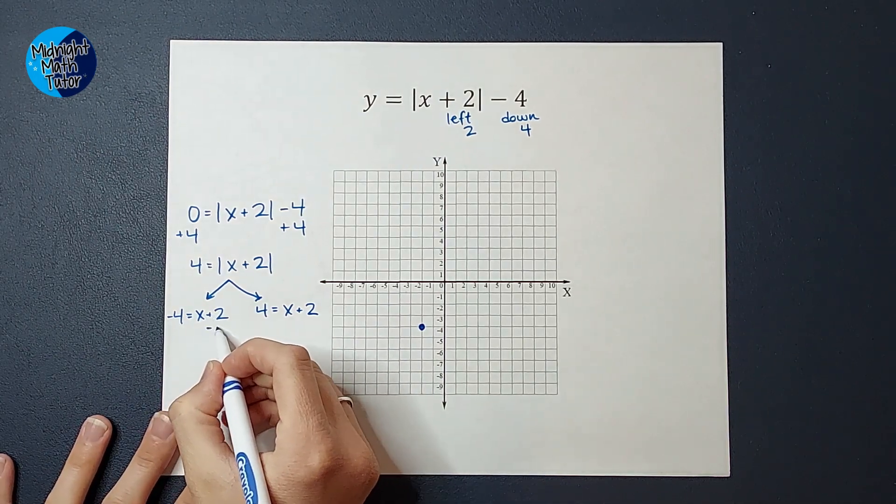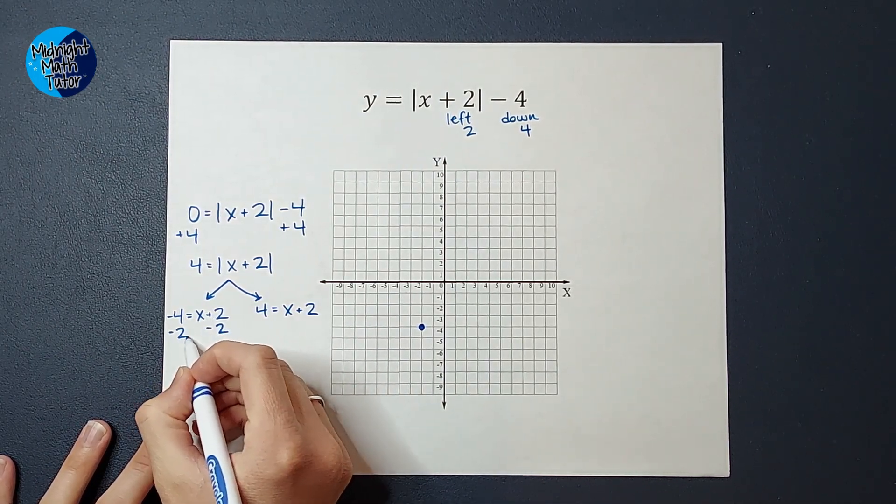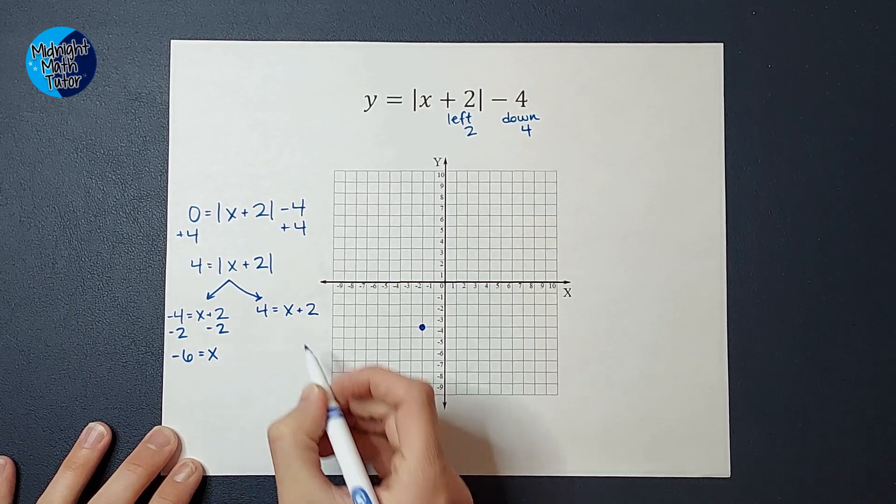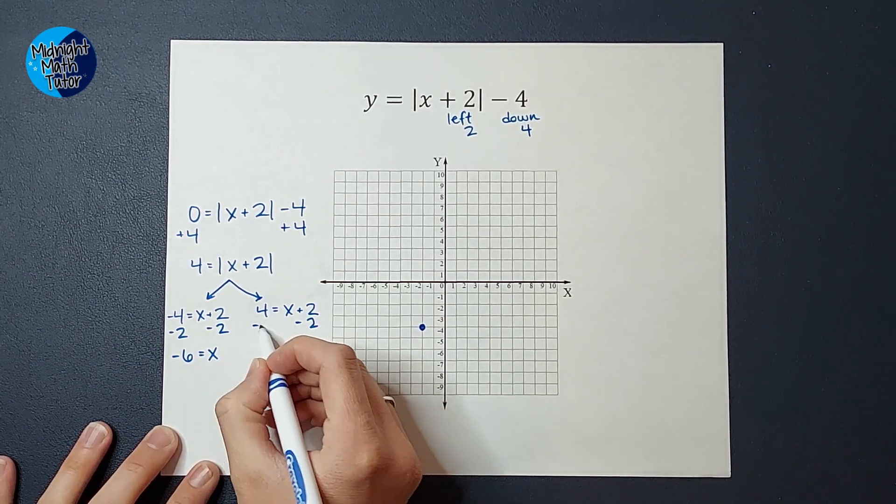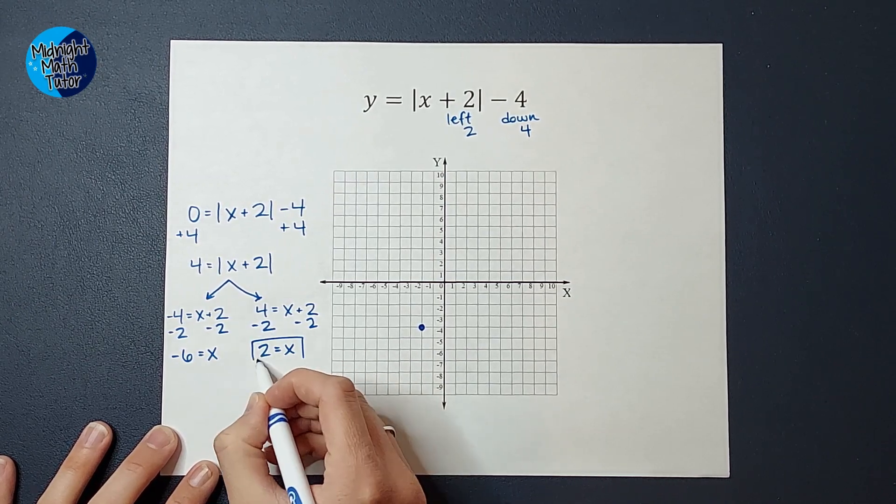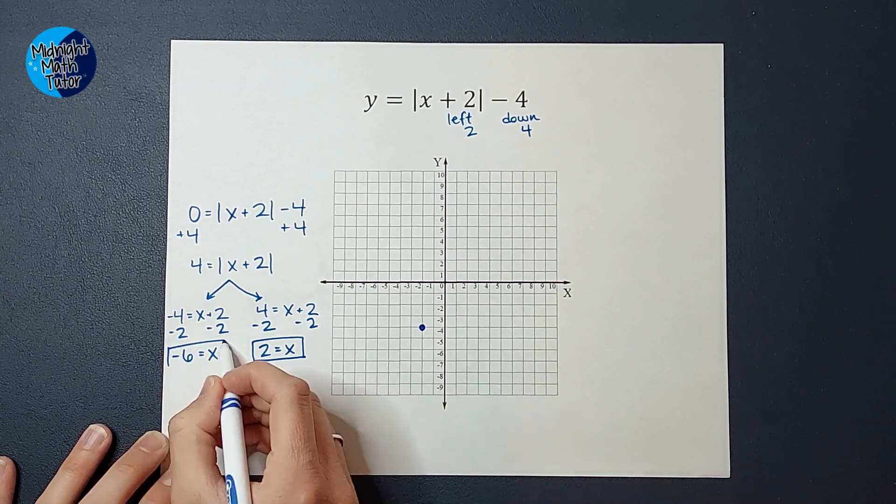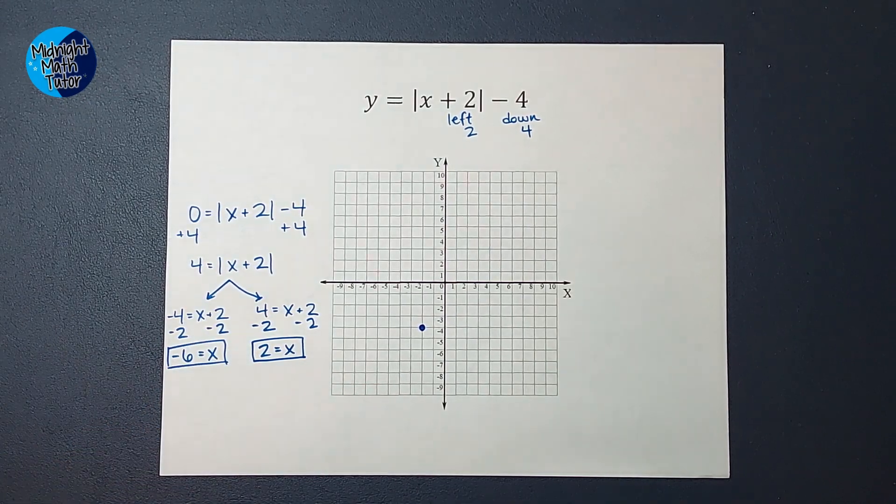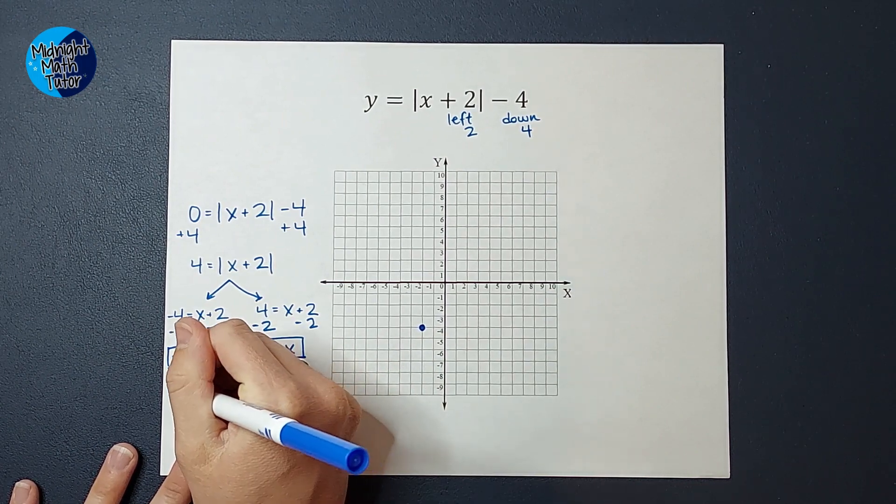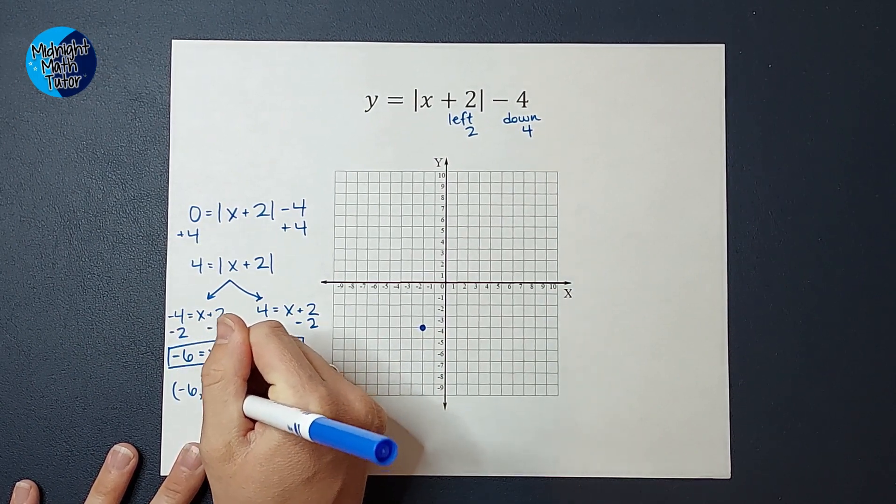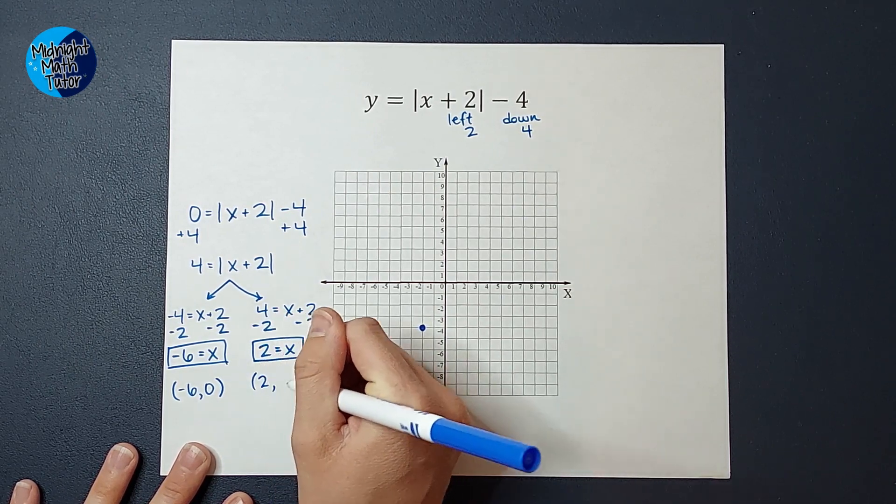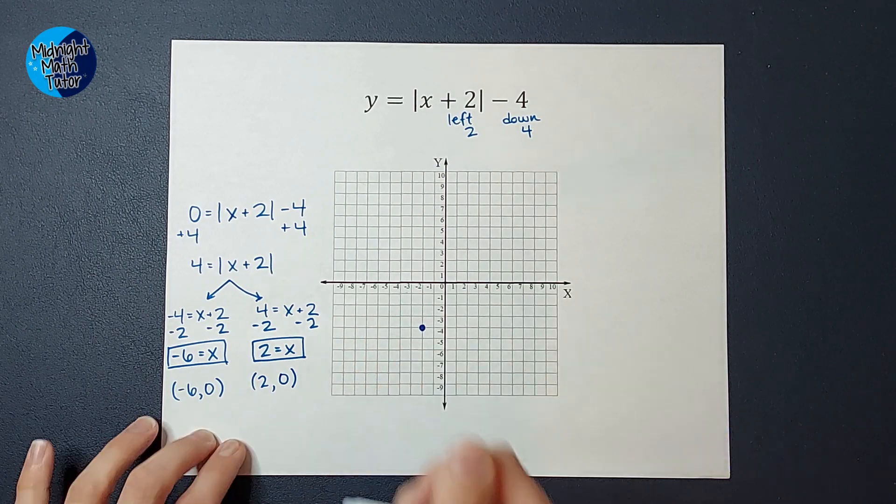So now I'm just trying to get these X's alone. So I'm going to subtract two from both sides and I get negative six equals X. And then over here I get four minus two, two equals X. So when I plugged in zero for Y, let's do our ordered pairs here. I got negative six when I plugged in zero for Y. So there's one ordered pair. I also got two when I plugged in zero for Y.